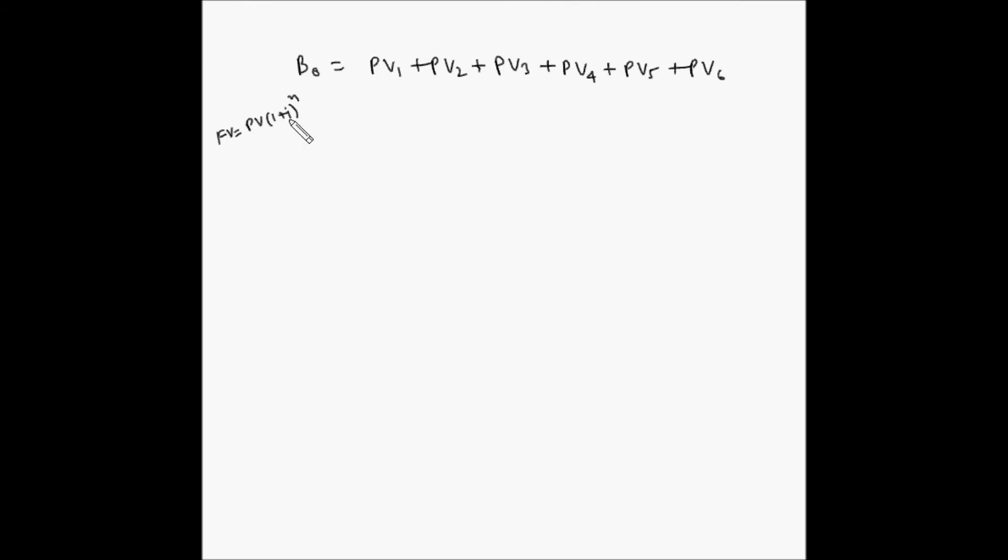So we have to find the present value. Present value is equal to future value divided by 1 plus i to the power n. Here i is nothing but the yield to call, that is the rate of return that we want to find out, and future value is nothing but the interest. In case of pv6 it will be the call price.